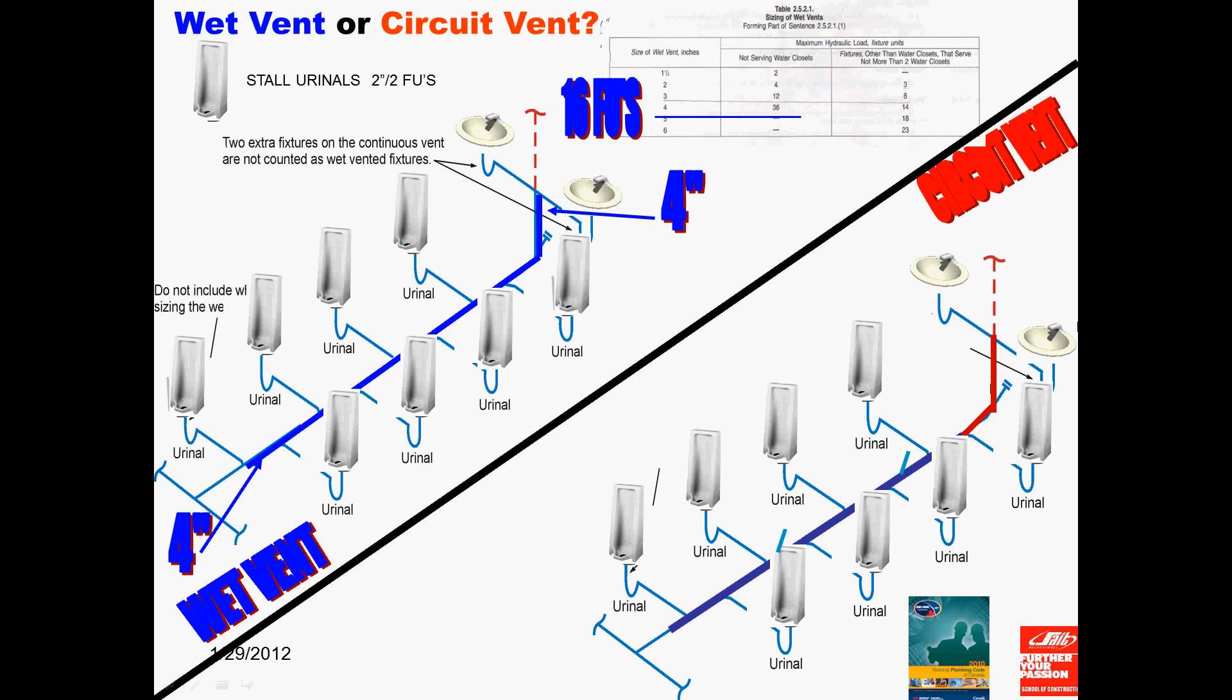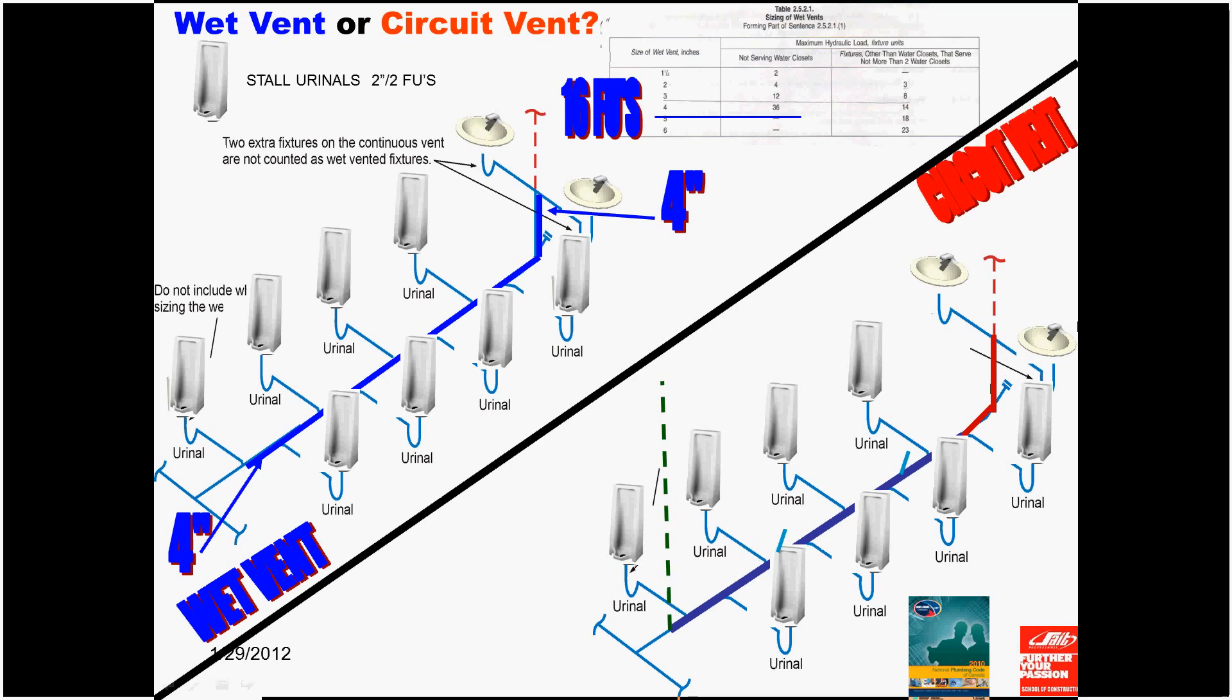Now, let's continue on with the dark blue pipe, which is now our circuit vented branch. The circuit vented branch goes right up until the relief vent, which is the green dash pipe downstream of the most downstream circuit vented branch fixture.